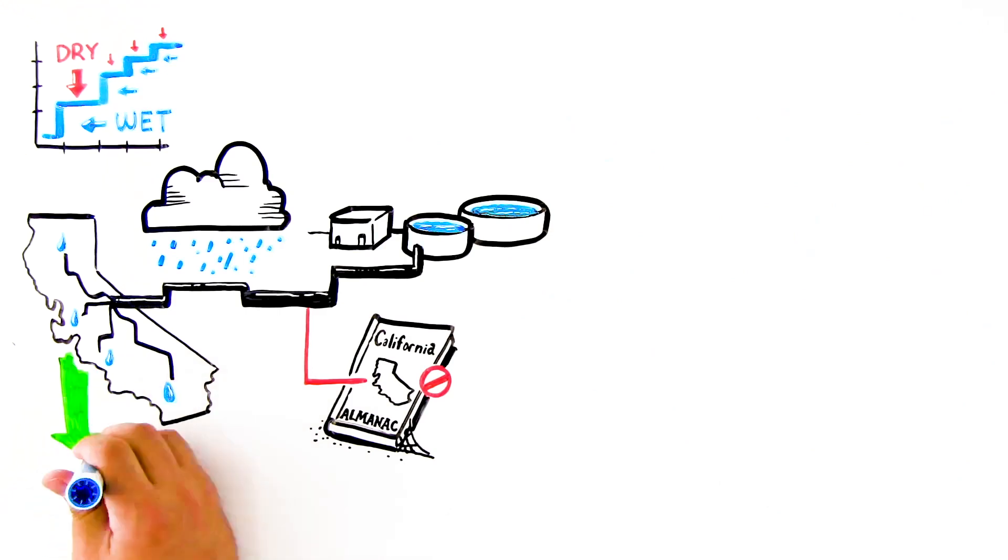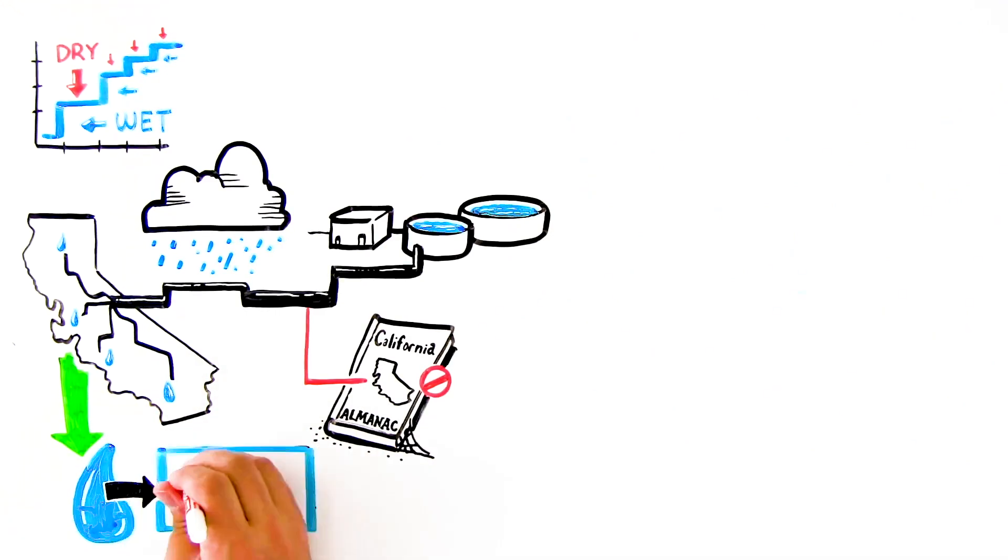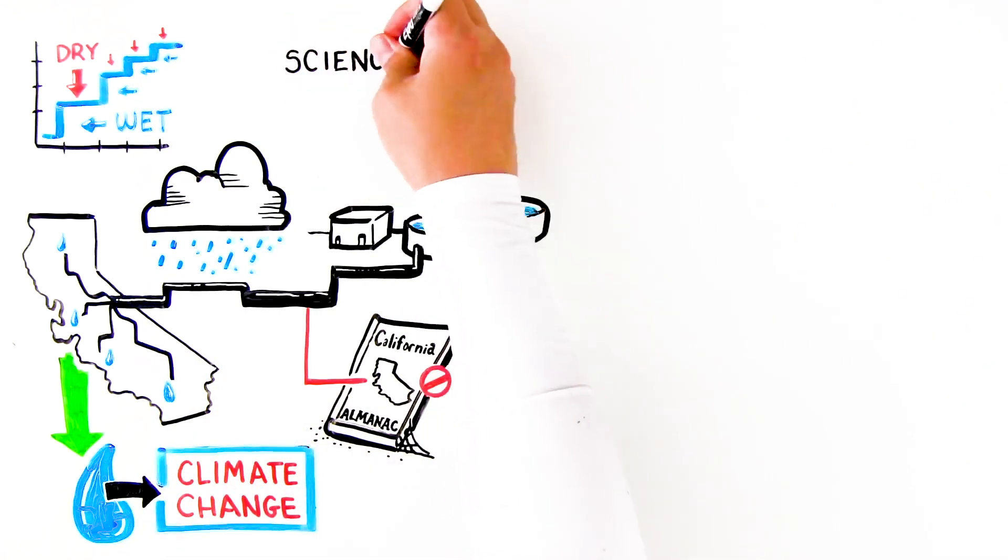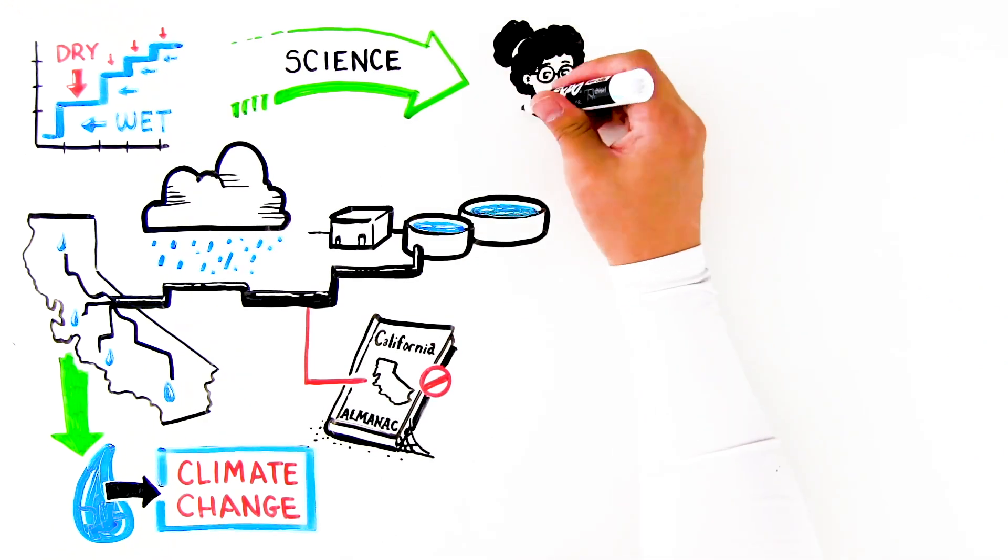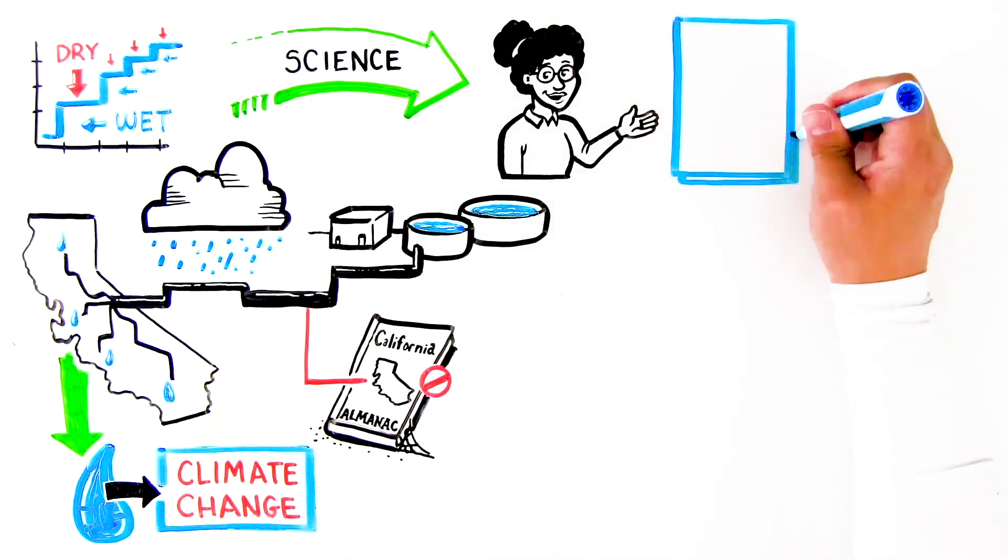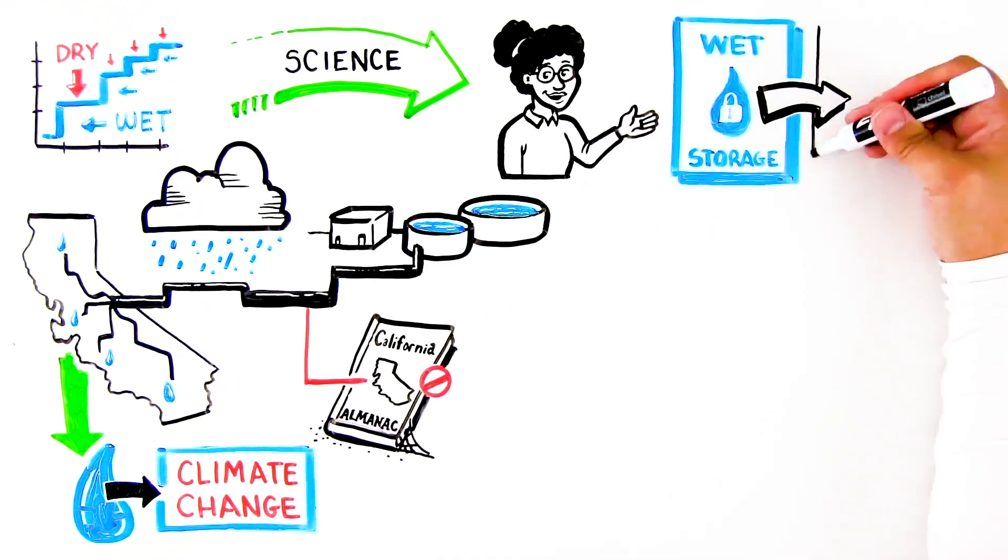California needs to adjust the way we manage water to be more resilient to climate change. By following the science and improving California's water infrastructure, we will be better prepared to divert water into storage when it's wet so that it can then be used when it's dry.